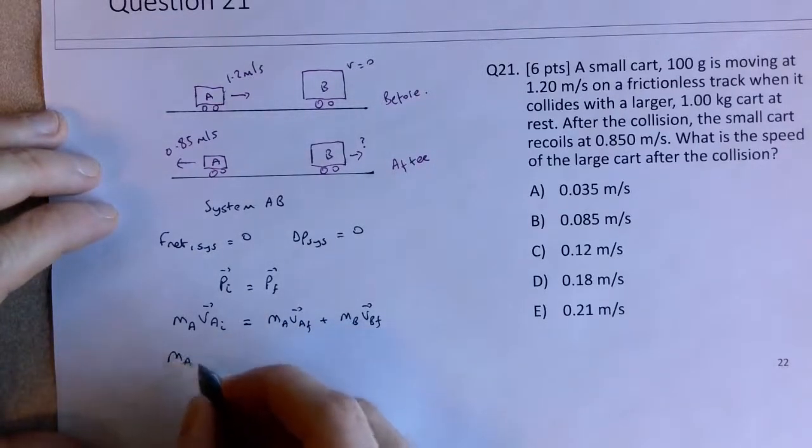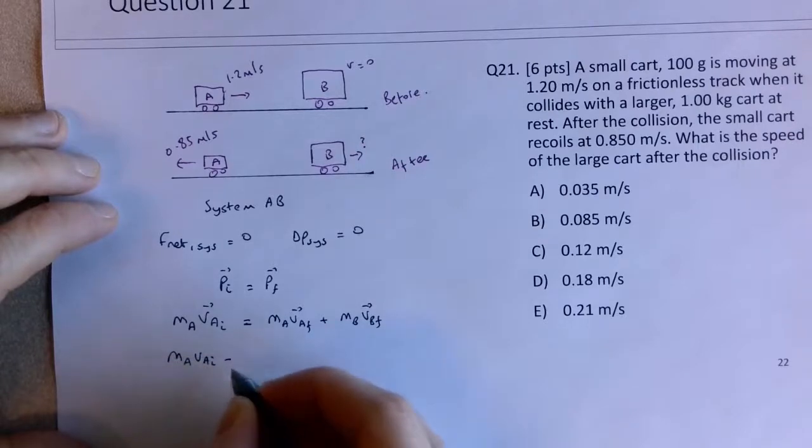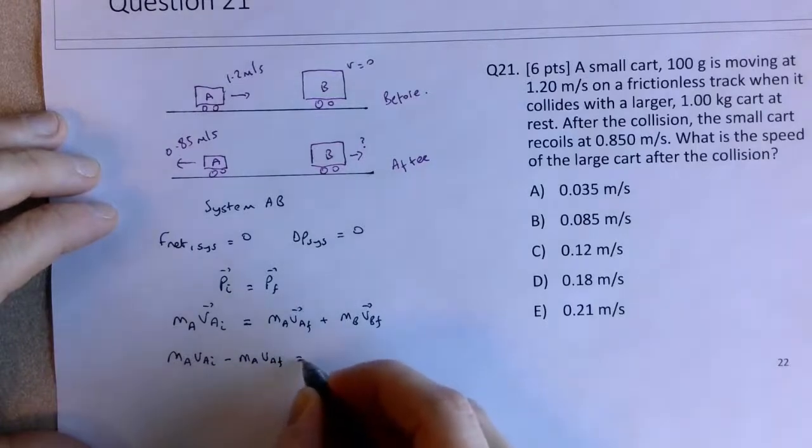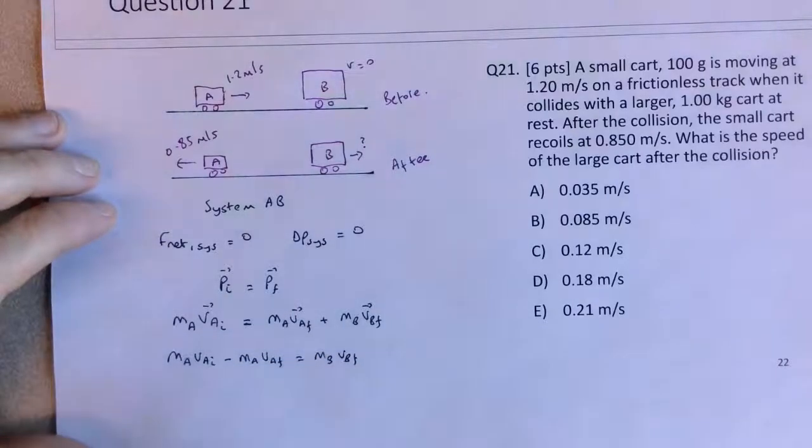So I have M_A V_A initial minus M_A V_A final equals M_B V_B final.